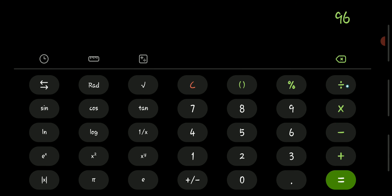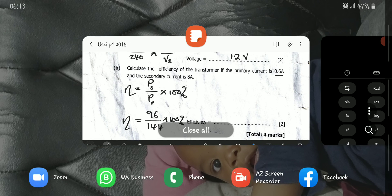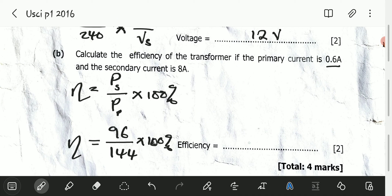96 divided by 144, which is 0.6666. Multiply that by 100, it gives us 66.6666. We can leave it to three significant figures, which will be 66.7%.